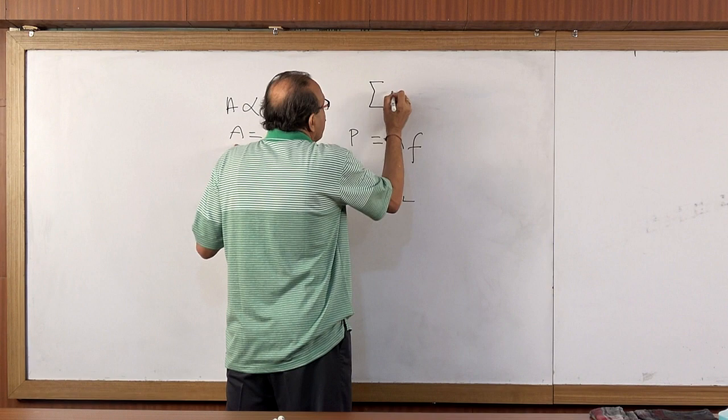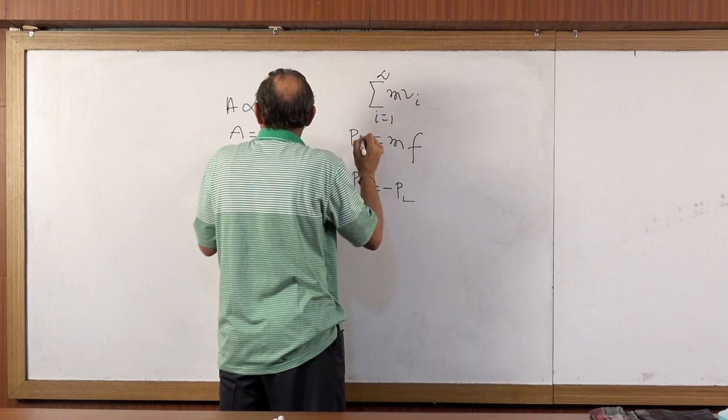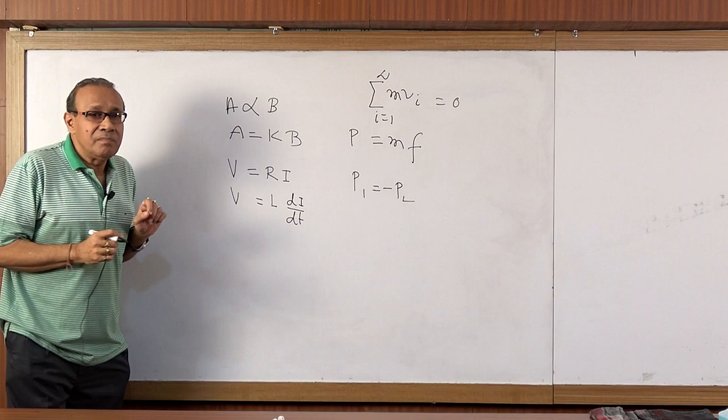Then came, let us put A equal to sigma MV_i, i equal to 1 to infinity, and put K equal to 0. This is laws of conservation of linear momentum.